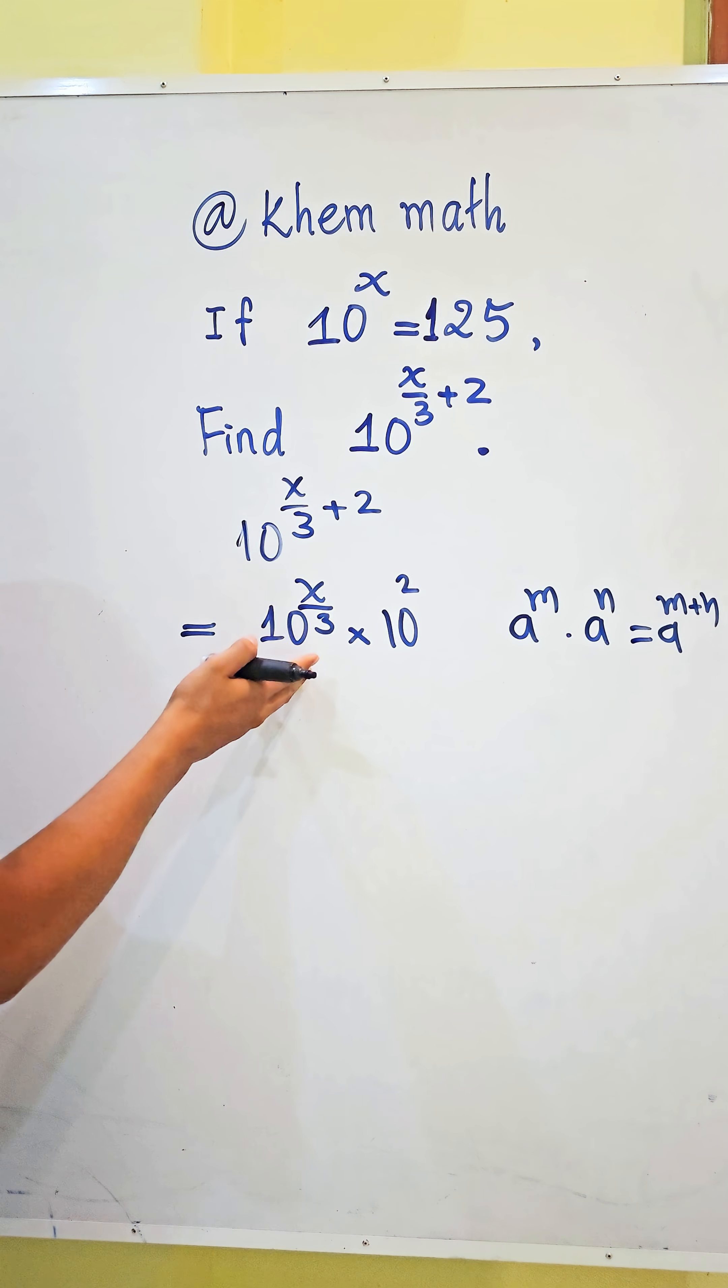So this also equals 10 power h all power 1 divided by 3, times 10 squared.